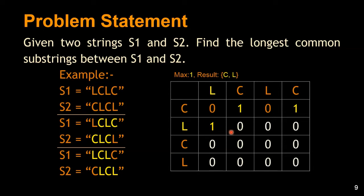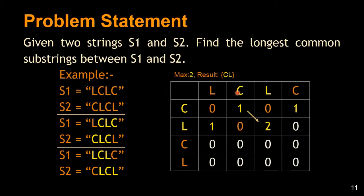Moving to the next column, there is a match between 'L' and 'L', and going up the diagonal we see 'C' and 'C' also match. So we increment from the diagonal value by one and get a common substring of length two, which we update in the result set and update the maximum longest common substring length. We throw away the single-length substrings since we only need the longest common substrings.